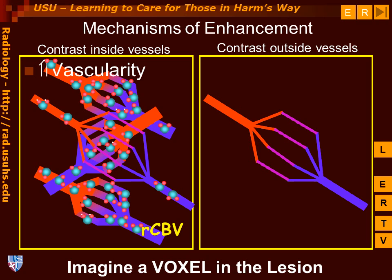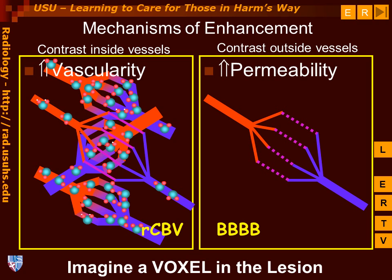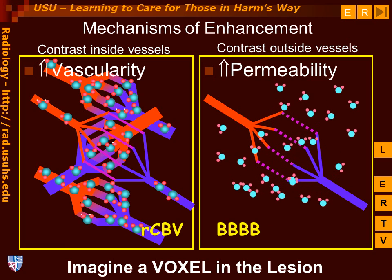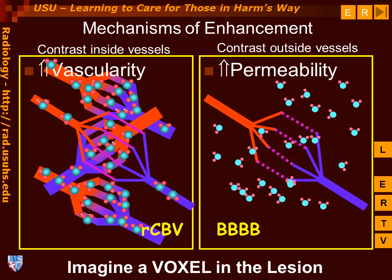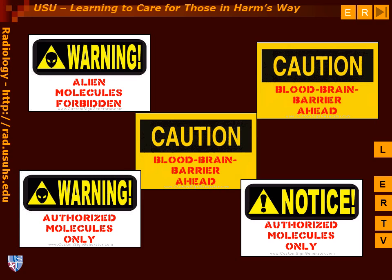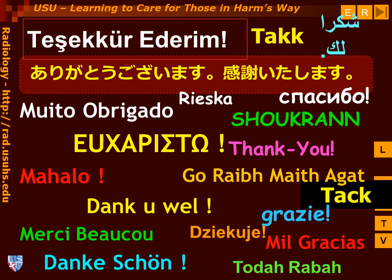So contrast enhancement can be produced by increased vascularity, and contrast enhancement may be produced by an increase in permeability that allows contrast molecules initially injected within a vessel to leave the vessel and pass into the surrounding interstitial fluid outside of the vascular lumen. The brain is a special place, and we like to protect it from molecules that don't belong there by having the special properties of the blood-brain barrier. Thank you very much for your attention.